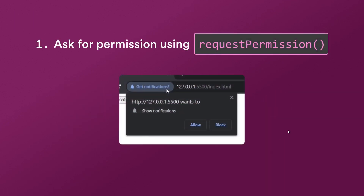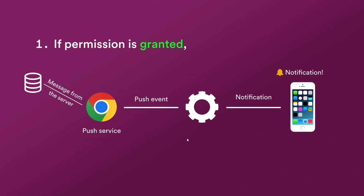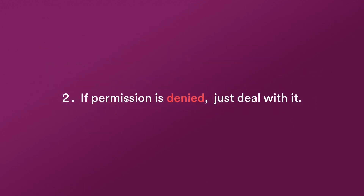We ask for permission from the user using the Notification API's requestPermission method. If the permission is granted, we use our service worker to subscribe to a push service using the Push API. Our service worker now listens for push events, and on arrival of a push event the service worker awakens and uses the information from the push message to show a notification using the Notification API. On the other hand, if the permission is denied, there is little we can do, but we'll try to handle this case in the code as well.